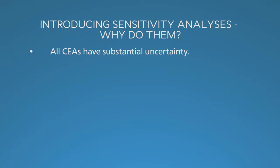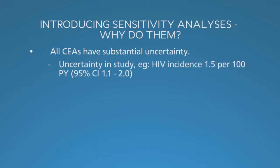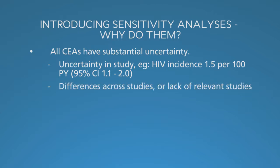Each input has uncertainty. This may be formal confidence bounds — for example, HIV incidence of 1.5 per 100 person-years, 95% confidence interval 1.1 to 2.0 — or differences in estimates across studies, or a lack of relevant formal studies forcing reliance on expert opinion.